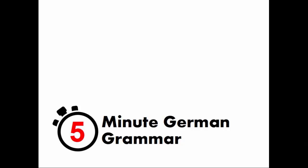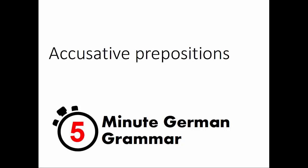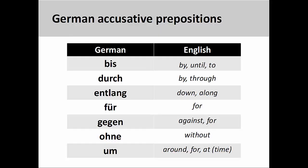Welcome to 5-Minute German Grammar. This presentation will cover accusative prepositions. In a prior presentation, we learned how accusative prepositional phrases function and saw that there are seven accusative prepositions in German: bis, durch, entlang, für, gegen, ohne, and um. This presentation will explain how to use these prepositions in a sentence.